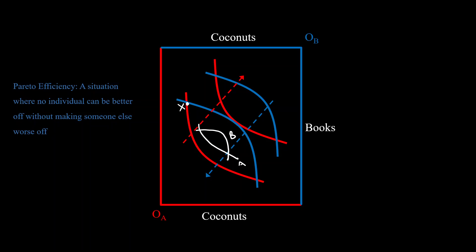So any time these ICs cross, there will be a region like this, the one I'm shading in white. Where both, so in this region both A and B will be better off. So your Pareto efficient point will be when the indifference curves are touching but not intersecting. And that is when they are tangential.